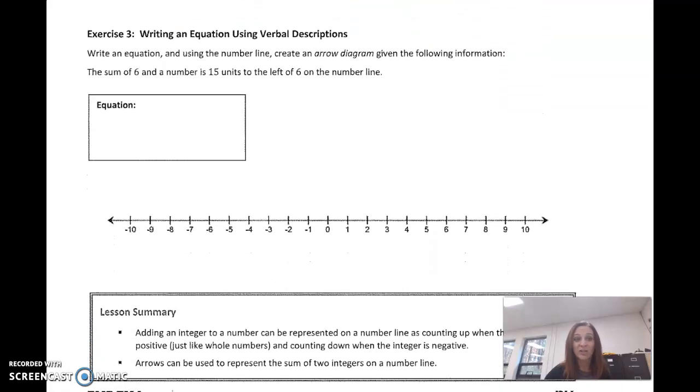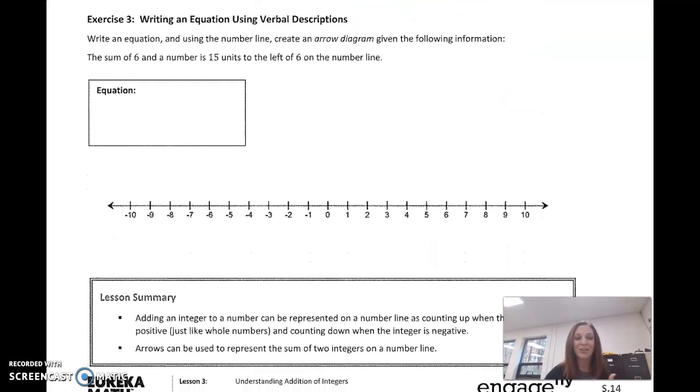All right, so let's write an equation. Now, again, my rule for writing equation, got to have some variables or a variable, some numbers, and an equal sign. Got to have the equal sign. So it says write an equation, and using the number line, create an arrow diagram. We're just going to be doing what we're doing with vectors, given the following information.